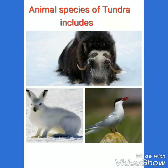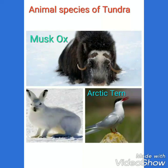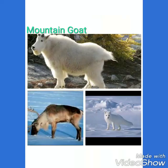The animal species of the tundra include caribou, arctic hare, musk ox, arctic tern, arctic wolves, arctic fox, flies, mosquitoes, seagull, salmon, and polar bears.